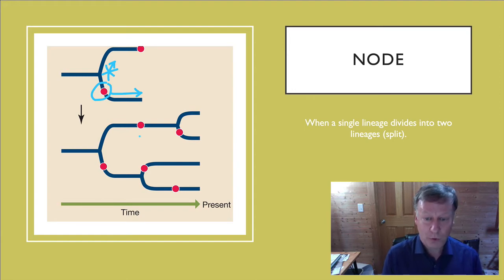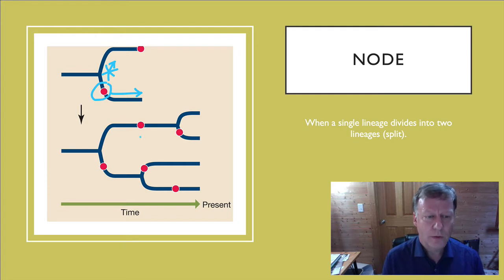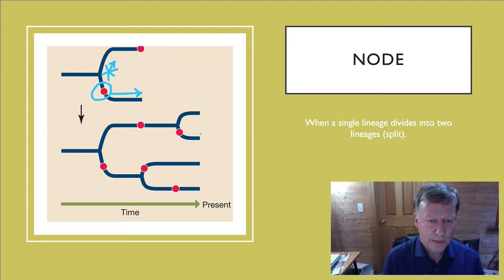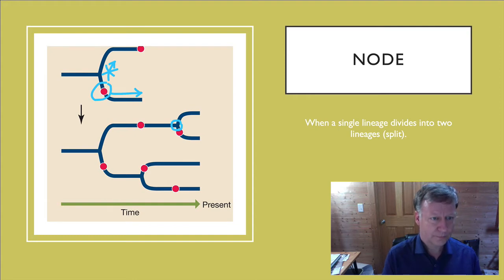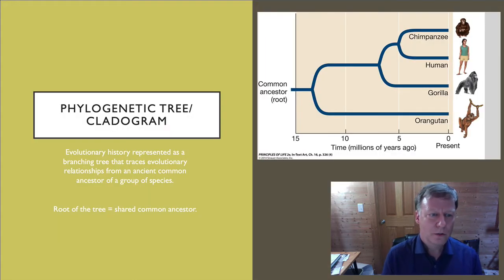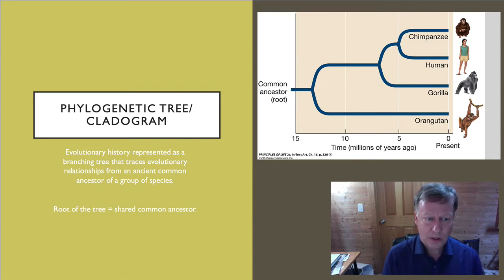Cladograms often show multiple nodes, multiple splits that occur, and can show multiple traits being derived. When you are trying to talk about common ancestors, common ancestors are the point right before the split, so you're looking at the node. For example, the common ancestor between this individual and this individual would be this node. This was the most recent time they shared a common ancestor. A phylogenetic tree, or cladogram, is the evolutionary history represented as a branching tree that traces evolutionary relationships from an ancient common ancestor for a group of species.